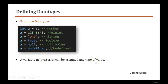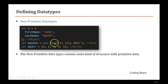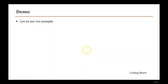Non-primitive types are structural data types that contain some kind of structure with primitive data. They include object, date, and array. An object contains key-value pairs like firstName: 'John', lastName: 'Smith'. A date is declared with new Date() and given a date string. An array stores multiple values of the same data type.